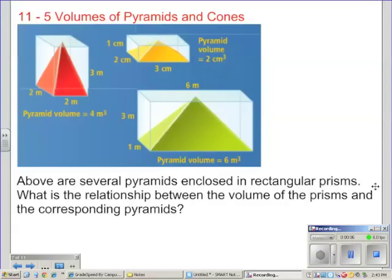11-5 is the volumes of pyramids and cones, and we'll first try to connect 11-5 to what we've already learned in 11-4. Above you'll see several pyramids enclosed in rectangular prisms. What is the relationship between the volume of the prisms and the corresponding pyramids?